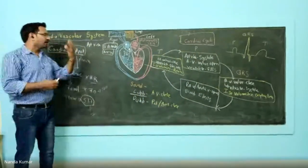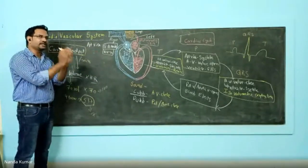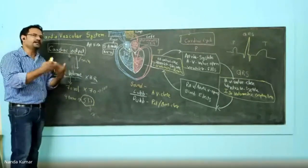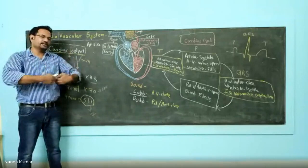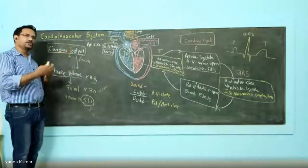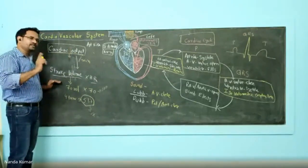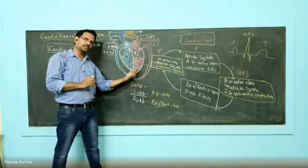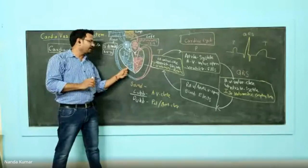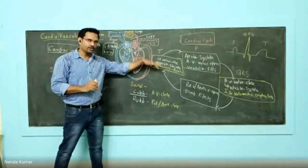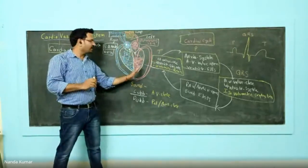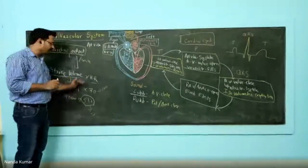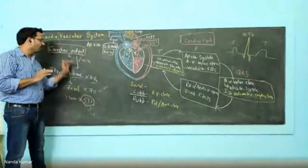Cardiac output is the efficiency function of the heart — how efficiently the heart is working can be described by cardiac output. Cardiac means heart; output means what is coming out — blood comes out of the heart. Cardiac output indicates the amount of blood ejected from the heart per minute. This is numerically given by stroke volume multiplied by heart rate. In a healthy individual, the right ventricle sends 70 ml of blood to lungs and the left ventricle sends 70 ml of oxygenated blood to the aorta. Heart rate is 70 beats per minute, giving 5 liters of cardiac output.